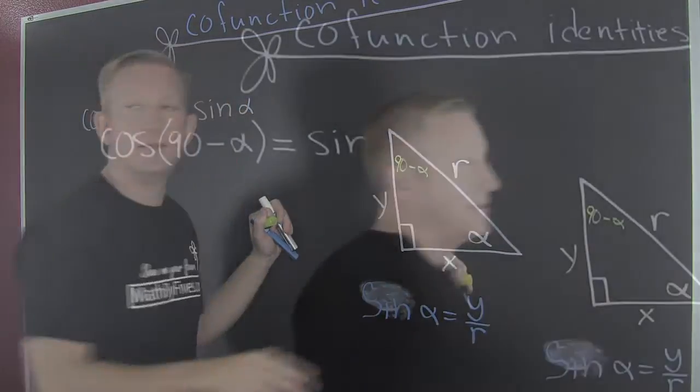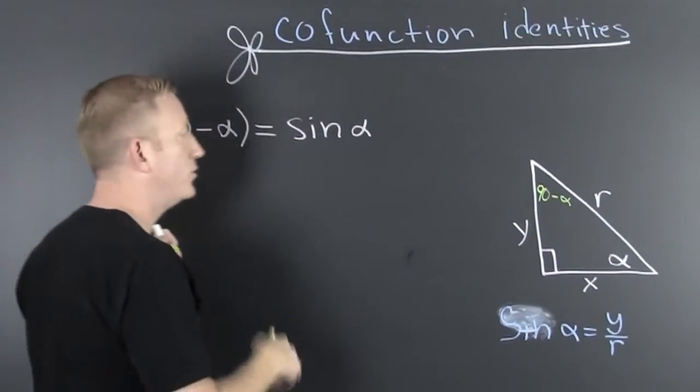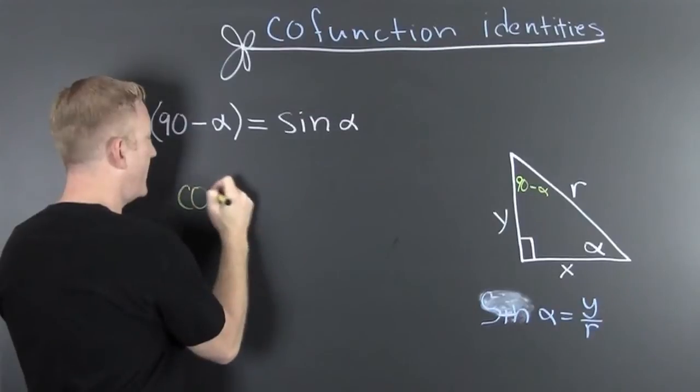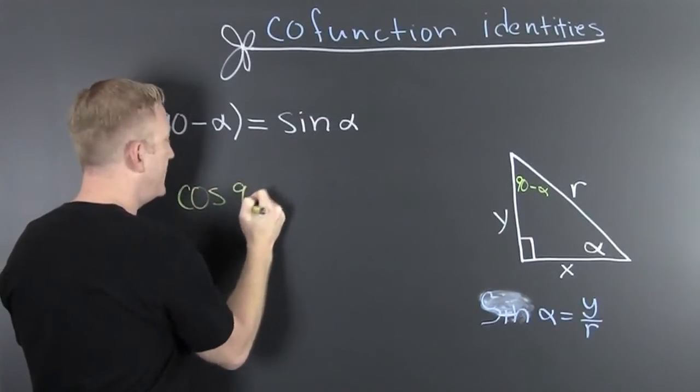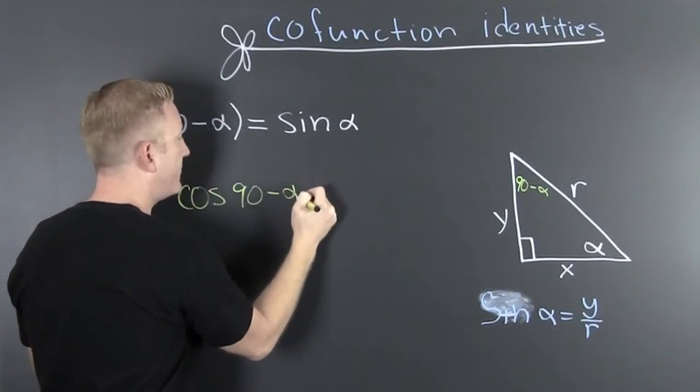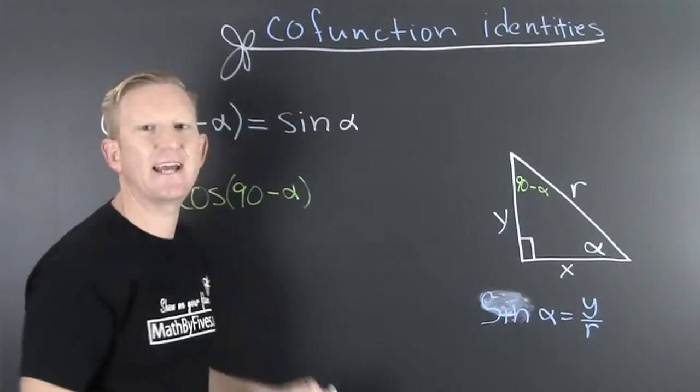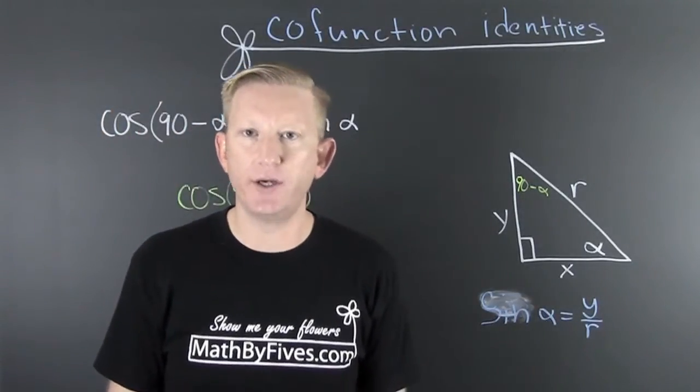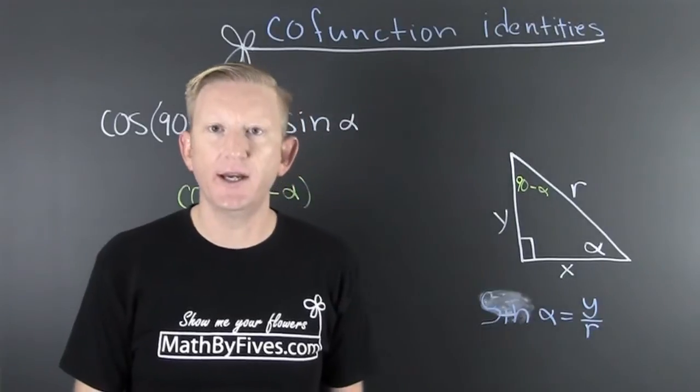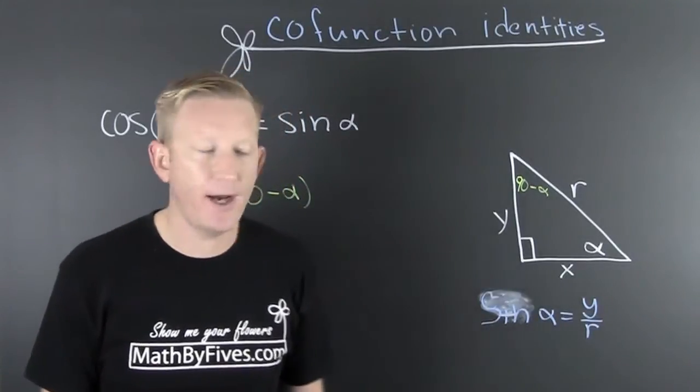let's look at the sine. Oh, no. The cosine. The cosine of 90 minus alpha. When we're looking at our right triangle trig, cosine is the adjacent over the hypotenuse.